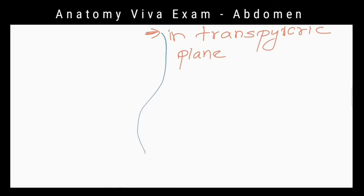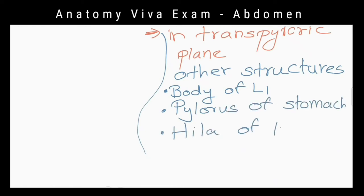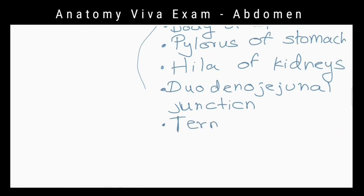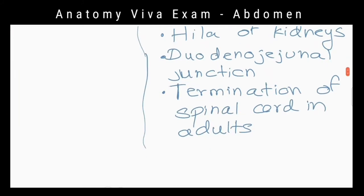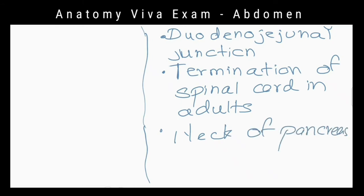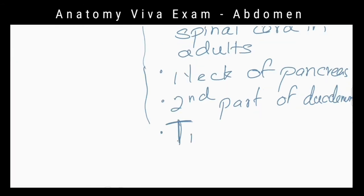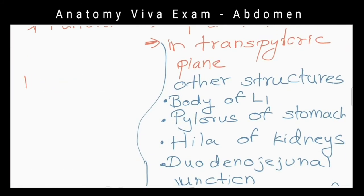What are the other structures crossed by the transpyloric plane? Body of the first lumbar vertebra, pylorus of the stomach, hilum of the kidneys, duodenojejunal junction, termination of the spinal cord, neck of the pancreas, second part of the duodenum, tip of the ninth costal cartilage.